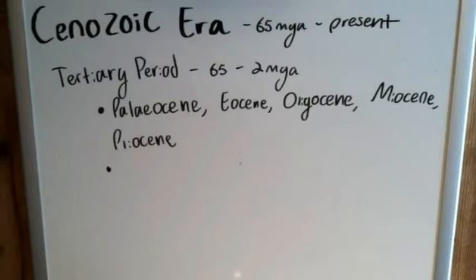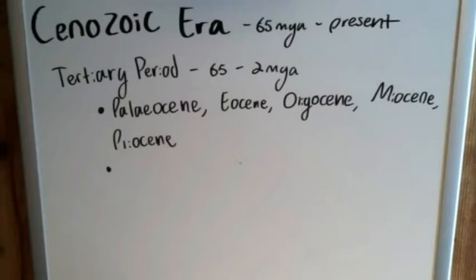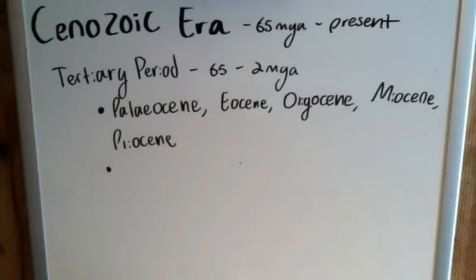Only two epochs in the Cenozoic Era are not included in the Tertiary Period. Those are described as being in the Quaternary Period — tertiary, quaternary, following in that sort of order — and we'll talk about those later.